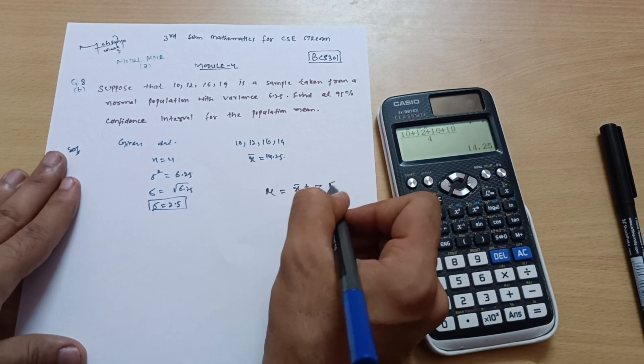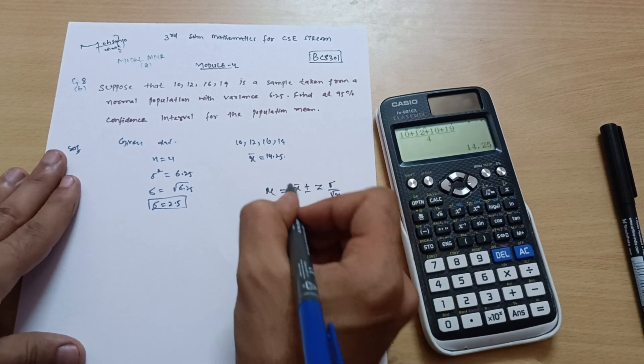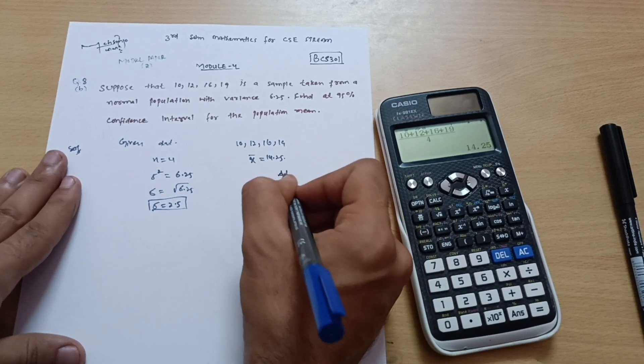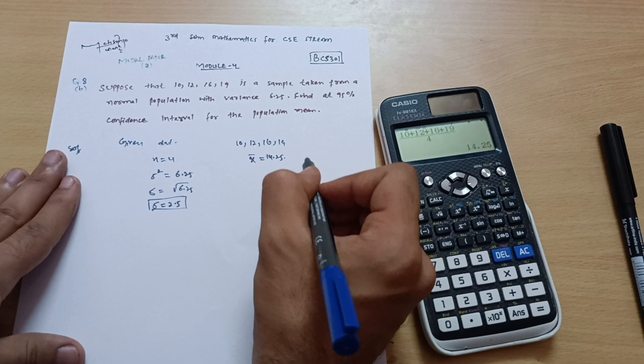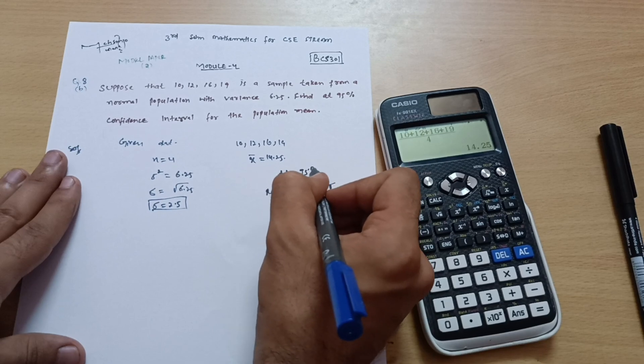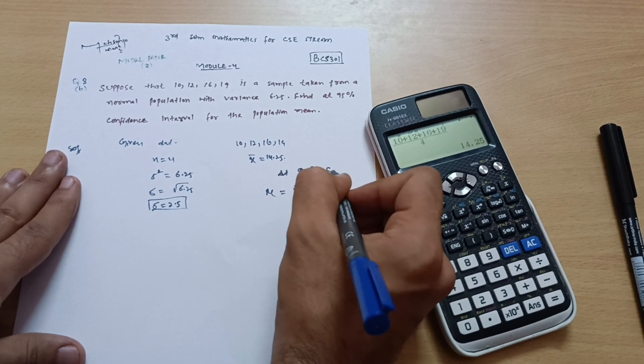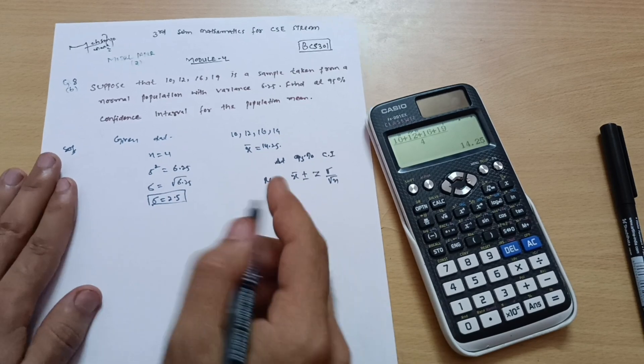This is the general formula, but we are calculating here at 95%. So at 95% confidence interval, we have to calculate this one.